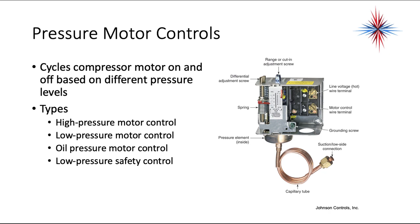Pressure motor controls use pressure to turn motors on and off. They use pressures to open and close switches, cycling a compressor motor on and off based on different pressure levels. There are different types: high-pressure motor controls, low-pressure motor controls, oil-pressure motor controls, and low-pressure safety controls. They are all important and used in both air conditioning and refrigeration.